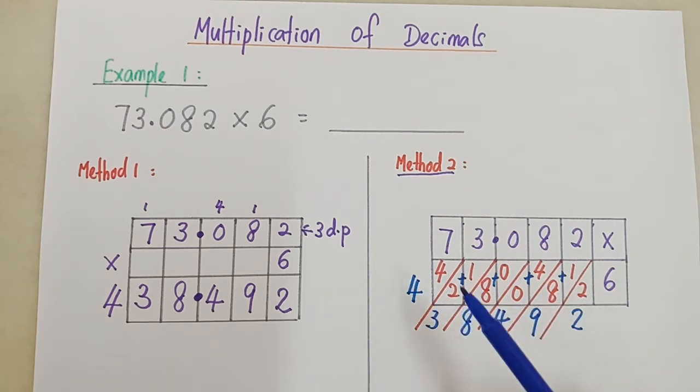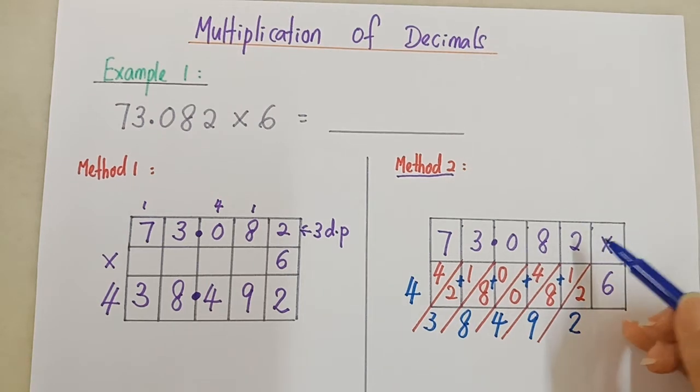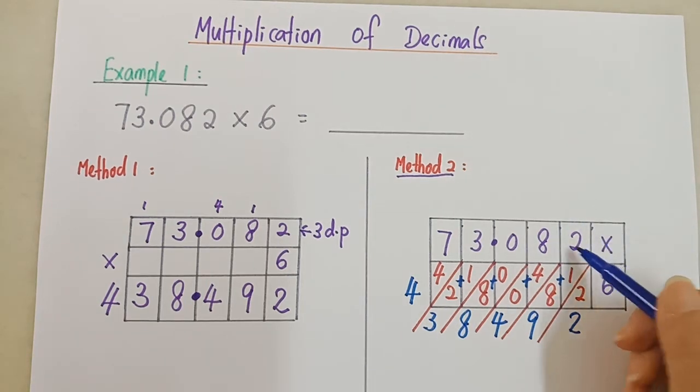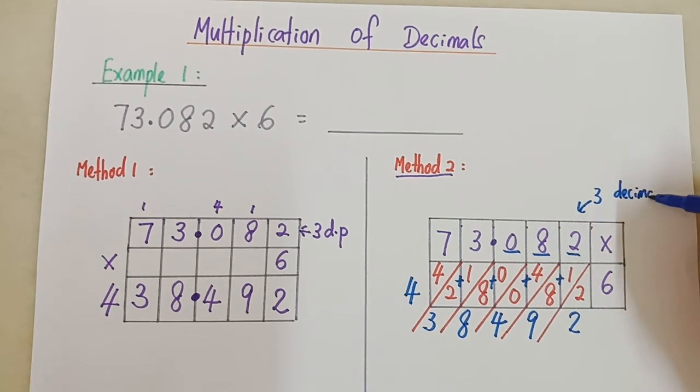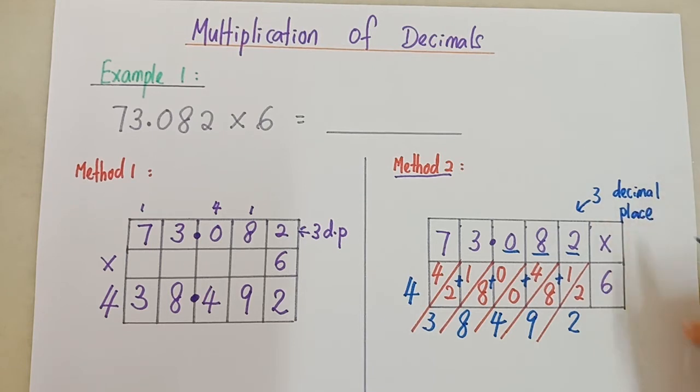Check. Sama kan nombornya? 4, 3, 8, 4, 9, 2. Sekarang jangan lupa decimal point. Sama juga kira dari belakang. 1, 2, 3. Ada 3 kan dari belakang? 1, 2, 3. Jadi, yang ini adalah 3 decimal place. 3 tempat perpuluhan.